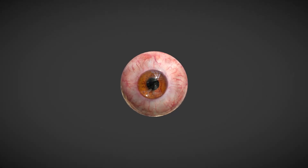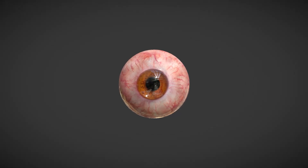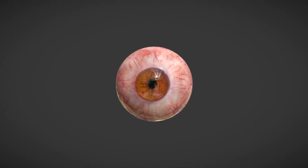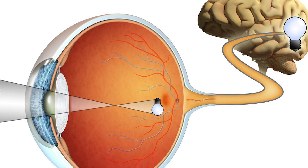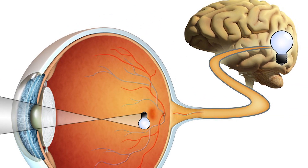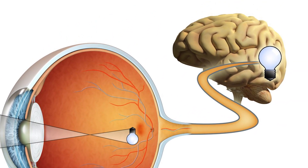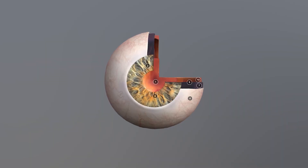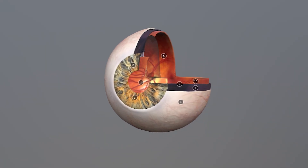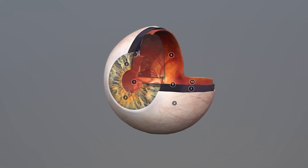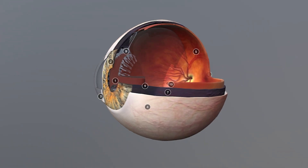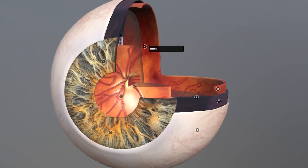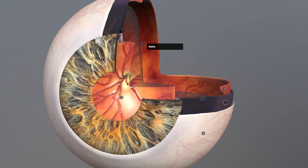The human eye is a sophisticated optical instrument that functions similarly to a camera. It collects light from the environment and transforms it into neural signals that the brain interprets as vision. Every component of the eye, from its external protective structures to its intricate internal layers, works in harmony to focus light accurately onto the retina, where visual information is processed.